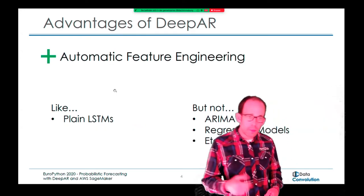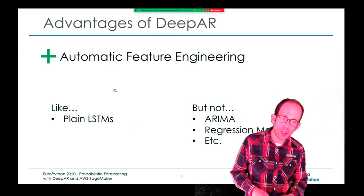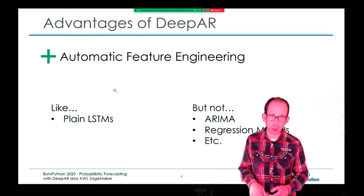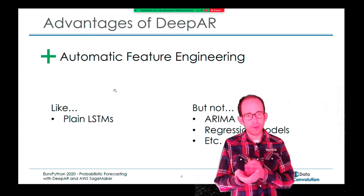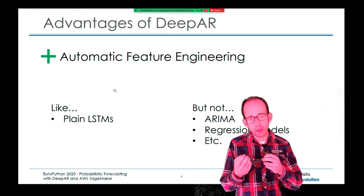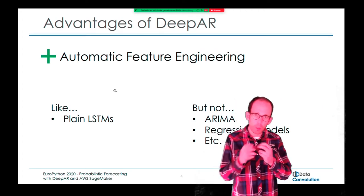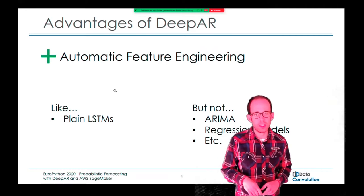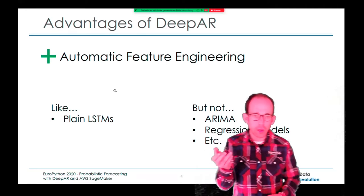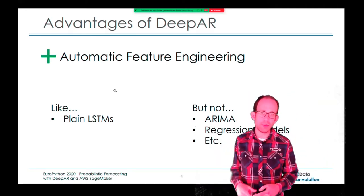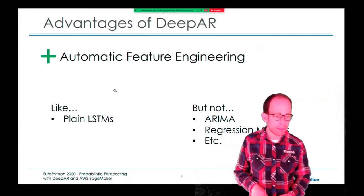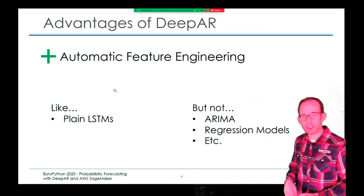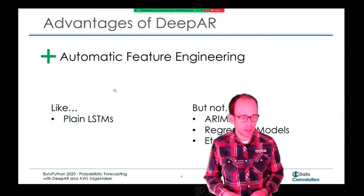Another feature is automatic feature engineering — that's basically what you get when you use neural networks. You put in the features and the neural network automatically models the input and generates some features internally. Plain LSTMs can also do this, but not our classical approaches like ARIMA, regression models, and so on.